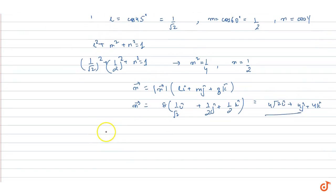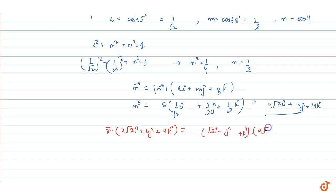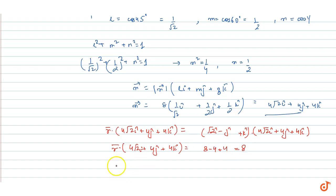Now using r⃗·n⃗ = a⃗·n⃗: the right-hand side is a⃗·n⃗ = (√2 î − ĵ + k̂)·(4√2 î + 4ĵ + 4k̂) = 8 − 4 + 4 = 8. So the equation of the plane is r⃗·(4√2 î + 4ĵ + 4k̂) = 8. This is the answer.